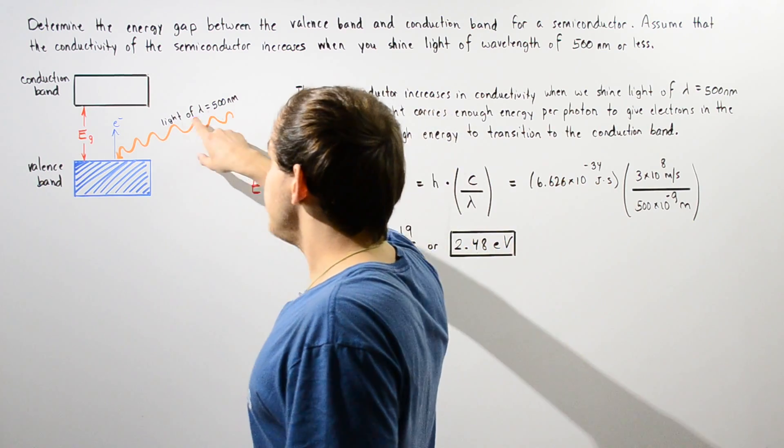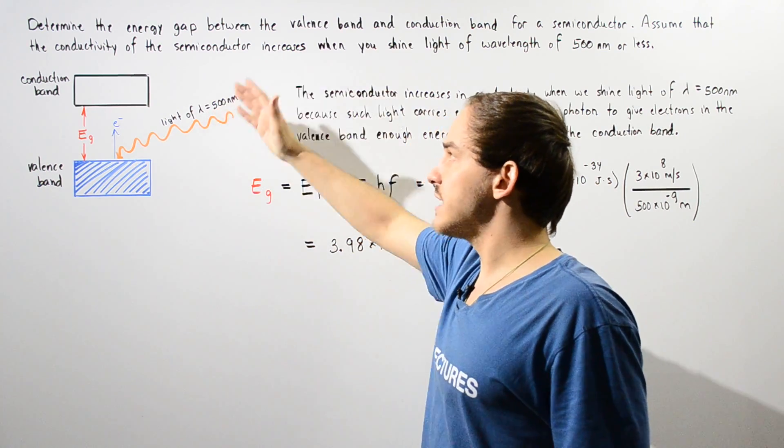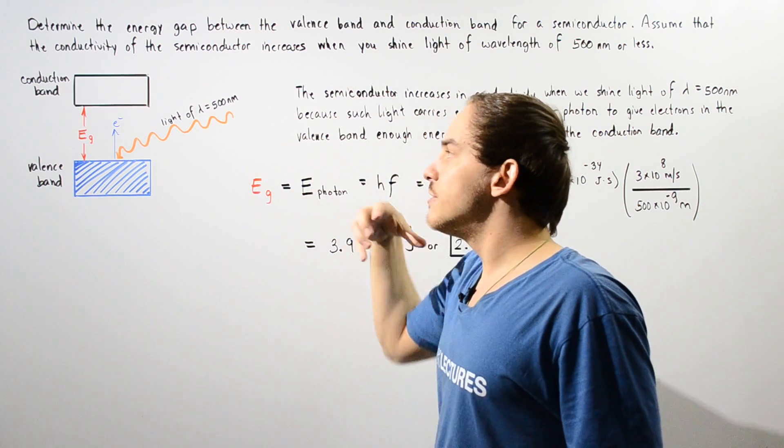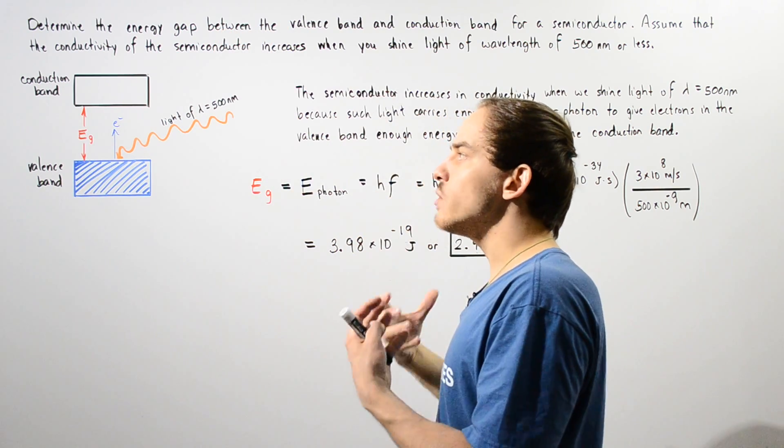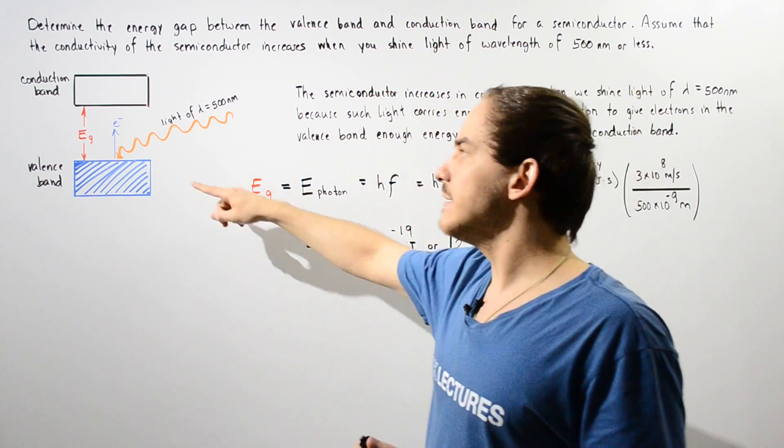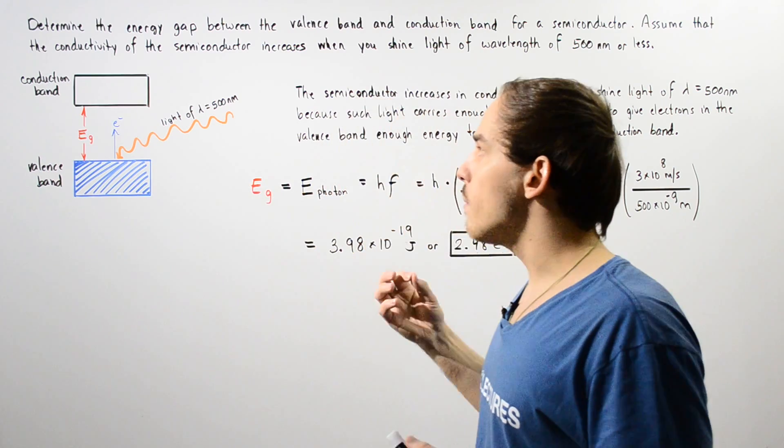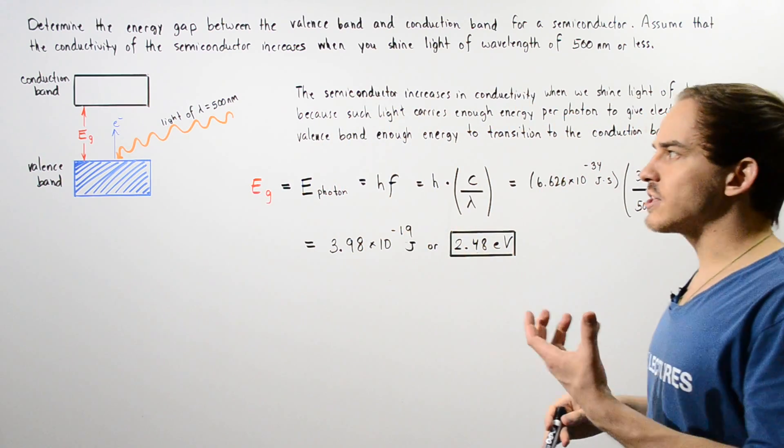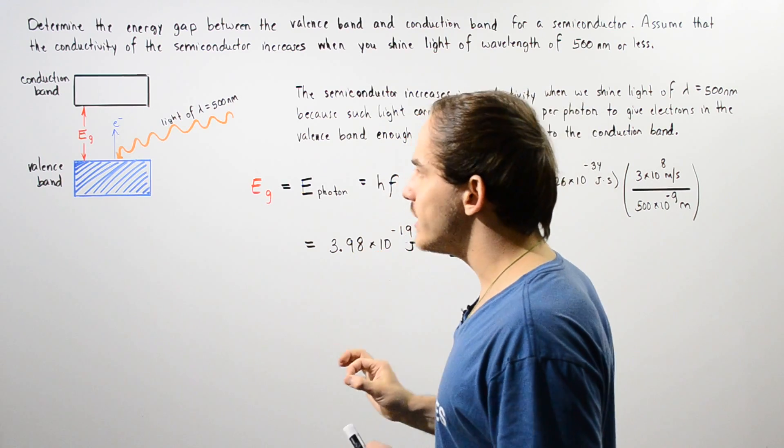So if we increase the wavelength to let's say 550, then our photons don't have enough energy to give to our electron. Remember, as we increase the wavelength of light, the energy decreases.